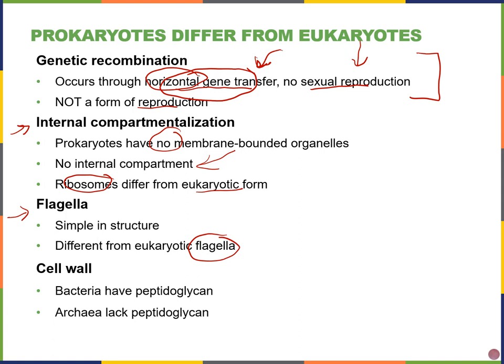Many prokaryotes have a cell wall. If they do, their cell wall is made of peptidoglycan — most have cell walls, and very few do not. Bacteria cell walls are made of peptidoglycan. For archaea, they also have cell walls, but they're not made of peptidoglycan. That's one major way to differentiate bacteria from archaea.